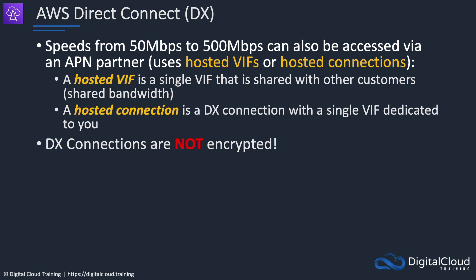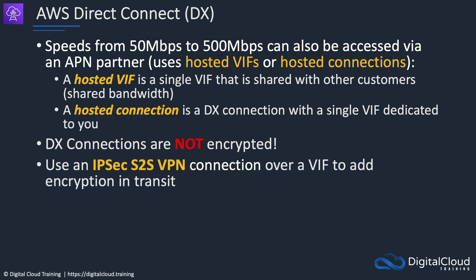It's really important to note that DX connections are not encrypted - this is not an inherently secure technology. If anyone managed to get to the ports in the data center or compromise the partner rack, the AWS rack, or your connection along the line, they could potentially sniff the data off the connections. If you want your data encrypted, you can run an IPSec site-to-site VPN connection over a VIF to add encryption in transit. So essentially you're running Direct Connect, and on top of that you're encrypting traffic using an AWS managed VPN connection.